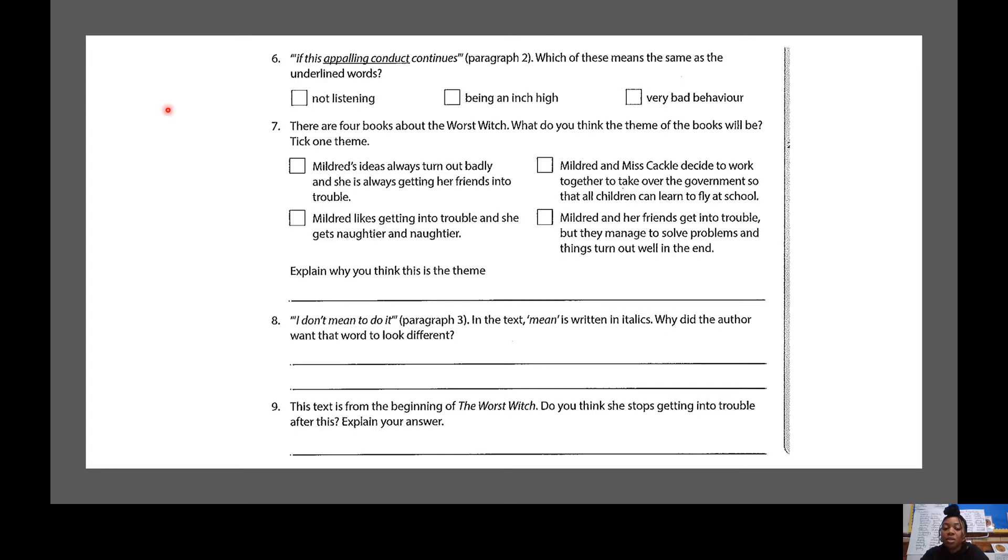So, you've got to tick one of those themes. And the next part of that question is to explain why you think this is the theme. Question number eight, Mildred says, I don't mean to do it in paragraph three. In the text, the word mean is written in italics. That means it is slanted. Why did the author want that word to look different from the rest of the words in that sentence and the rest of the words in the text? I don't mean to do it. Think about how we say that word in that sentence.